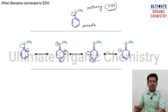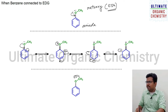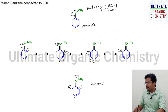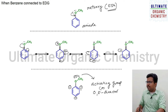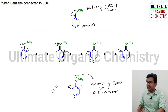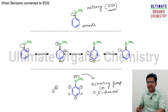So the overall resonance structure for benzene connected to an electron donating group shows that electron density is maximum at the ortho and para positions. This is called an activating group — the electron donating group is otherwise known as an activating group or ortho-para director. The electron density is maximum at ortho and para positions, so reactivity with an electrophile (which needs electrons) will be maximum at ortho and para, with very little reaction at the meta position.